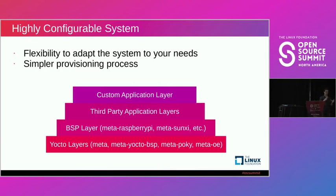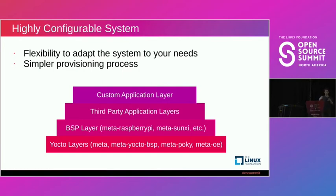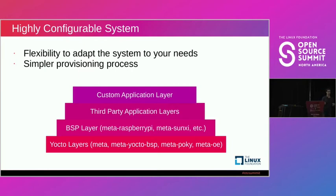For supporting multiple different types of devices, Yocto has a layer-based architecture. At the base layer you have your Poky and OpenEmbedded layers; above that are your board support package layers — BSP layers — such as Raspberry Pi or Sunxi; you might also have a custom board layer. On top of that you have your application layers for third-party and your team's applications. To build different targets you swap out those BSP layers as needed, and inside your custom layer you can specify which machines each configuration applies to, ending up with separate image files for respective boards.